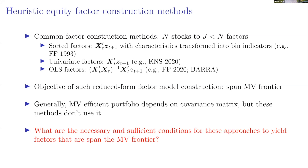We can also implement factors by running cross-sectional regressions — at any time T, regress returns onto characteristics, and the slope coefficients can be interpreted as portfolios or factors. These are basically a rotation of the univariate factors with the rotational matrix (X-prime-X) inverse. No matter which method you use, the objective is to create a reduced-form factor model that spans the mean-variance frontier.